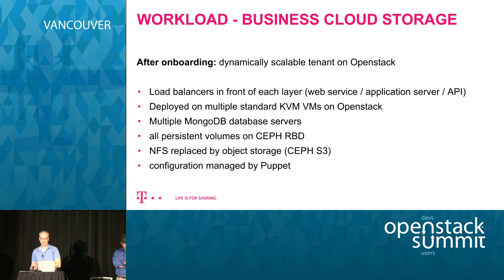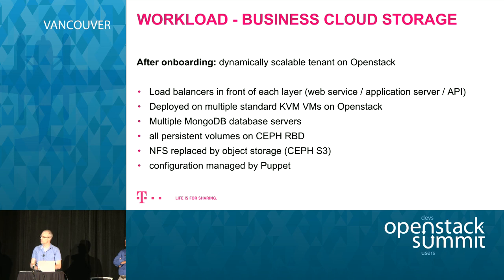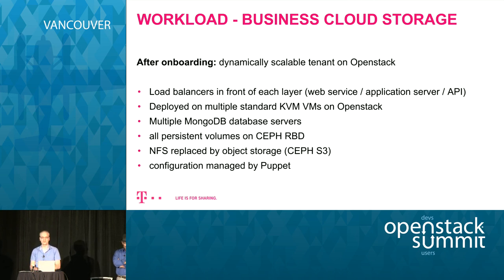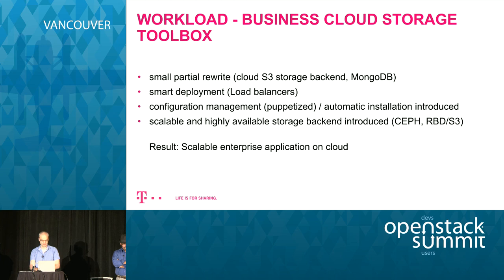It consumed very expensive storage appliances and didn't use any configuration management — if we wanted to scale out, we had to manually install a server, bring up all the software and the application, and then connect it to the rest of the system. It was not dynamically scalable. After onboarding, we had a dynamically scalable tenant on OpenStack. What we did was put load balancers in front of each layer of the application — in front of the web servers, application servers, databases, all interfaces, and the Ceph S3 server as well. We deployed the application on default KVM virtual machines, put multiple MongoDB servers in the back end, and all persistent volumes are hosted on Ceph RBD back ends. We replaced the NFS shared storage with a Ceph S3 back end, and configuration is now managed by Puppet — when a new VM starts up it's automatically configured.